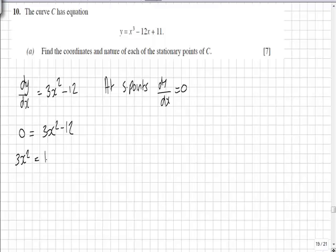So 3x² = 12, x² = 4, which means x can take values of plus or minus—don't forget the negative value—2.